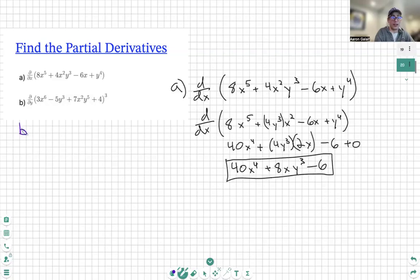So for b, first let's rewrite. d dy 3x to the sixth minus 5y cubed plus 7x squared y to the fifth plus four, all of that cubed.